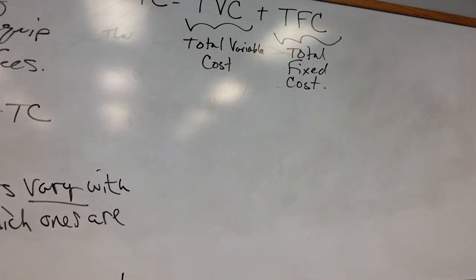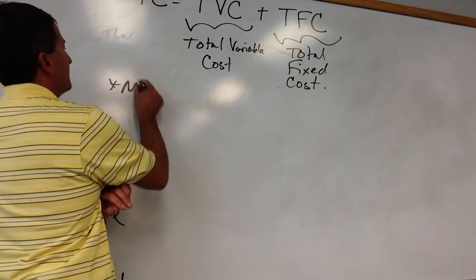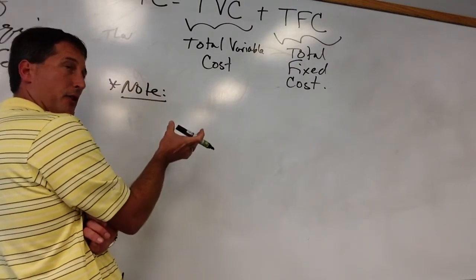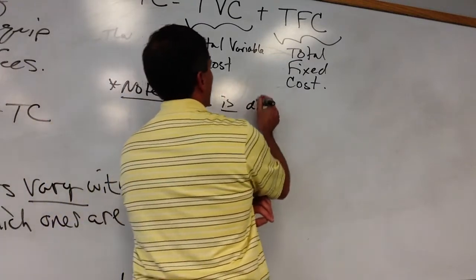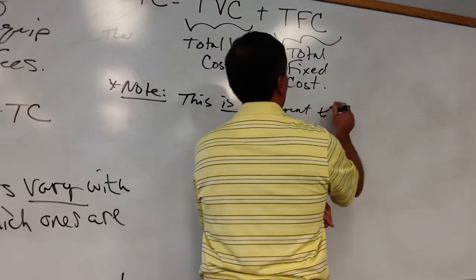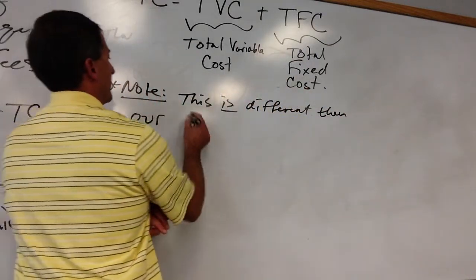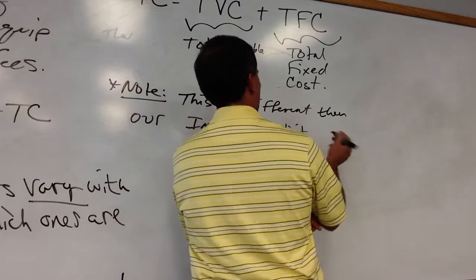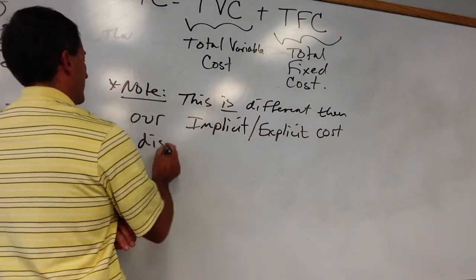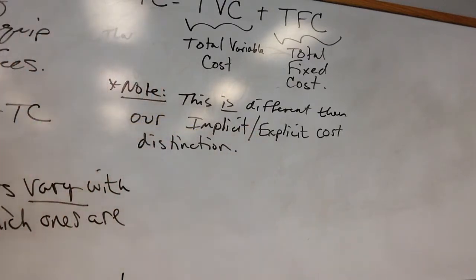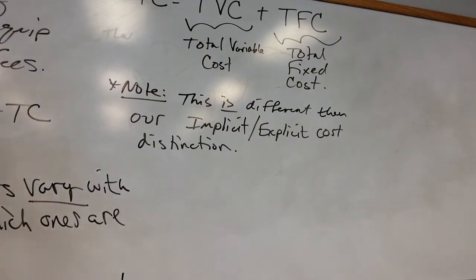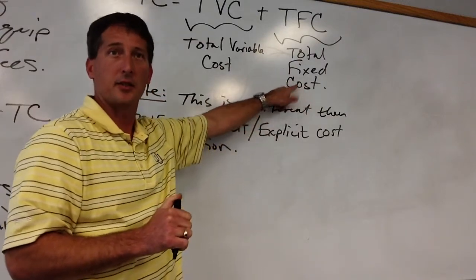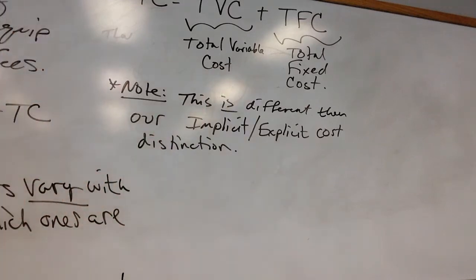Now, this is different than what we did before. So, I want to make one little note here. This is a bit different, potentially, than our implicit-explicit cost distinction. So, this is different, it can be related, but different than our implicit-explicit cost distinction. So, just be careful that they're not one and the same. It's possible that some things could be in both camps over here. There could be an implicit cost or an explicit cost that's fixed, and the same thing with variable. All right.